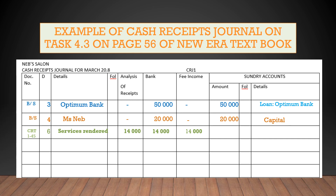The next transaction is on the 12th. The total cash takings for service fees for the week amounted to 11,000 Rand as per the cash register roll. Our source document is again the cash register tape. The transaction occurred on the 12th of March, again for services rendered. We received 11,000 Rand and yes, we handled the cash inside the business. Therefore the 11,000 Rand goes into Analysis of Receipts, it also goes into the Bank column, and it is for fee income. No entries are made in Sundry Accounts.